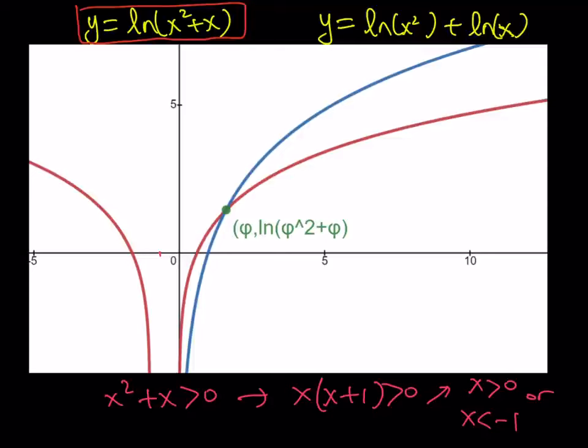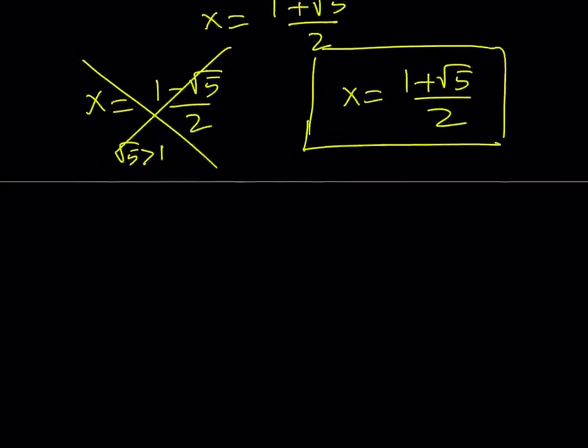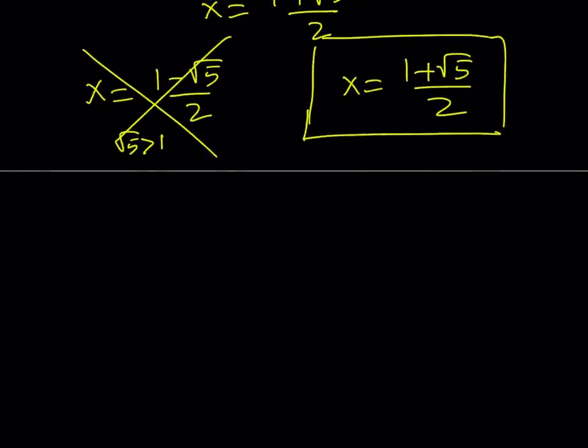So notice that we do have a -1 as our vertical asymptote in the middle, and we have kind of two branches. But the other function, which is the blue one, that only has one piece because you can write it as a single logarithm. You can also write ln(x²) as 2ln(x), and then the sum will be 3ln(x). So it's kind of like the ln(x) function, the blue one, but it's just a little bit stretched or compressed. And they intersect at a single point, as you can see here. And the x coordinate is going to be the golden ratio. So our solution, or the only solution that we get from this equation, is (1 + √5)/2. And this brings us to the end of this video.